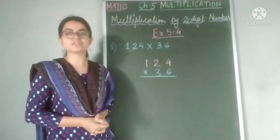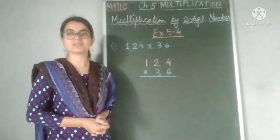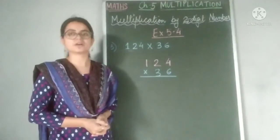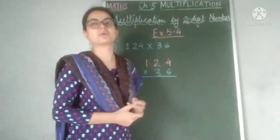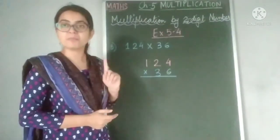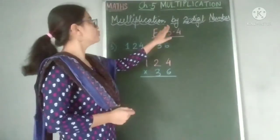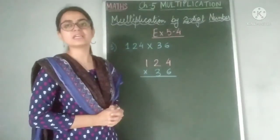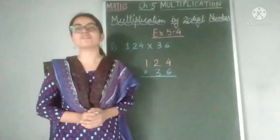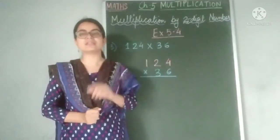Dear students, let us continue our learning of multiplication by taking it further. Today we are going to learn multiplication by 2-digit number, which means when our multiplier is a 2-digit number. Previously we had learnt multiplication by a single digit number, that is our multiplier was a 1-digit number.